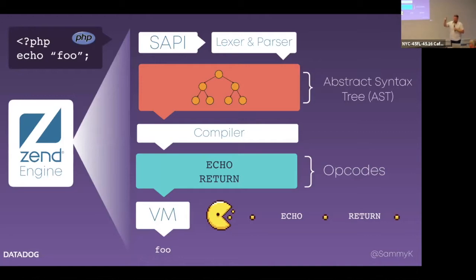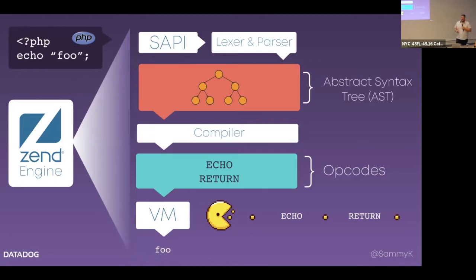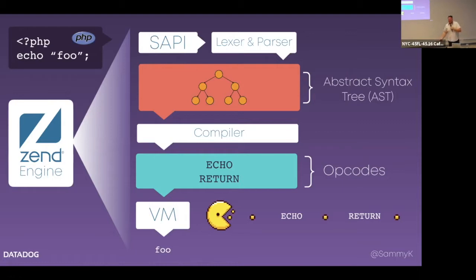There are a bunch of different opcodes that do many different things. Once you get these opcodes, it sends them to the virtual machine or executor. The executor goes through each of the opcodes and executes the handler for each one. That's another core thing to understand about how the PHP tracer works — they're executing the opcode handler. And then you get your output, like 'foo' — we go through all that just to see a word come on our screen.